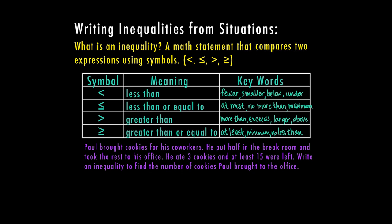Paul brought cookies for his coworkers. He put half in the break room and took the rest to his office. He ate three cookies and at least 15 were left. Write an inequality to find the number of cookies Paul brought to the office.